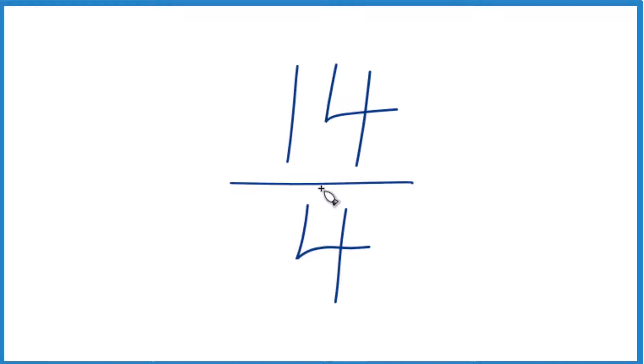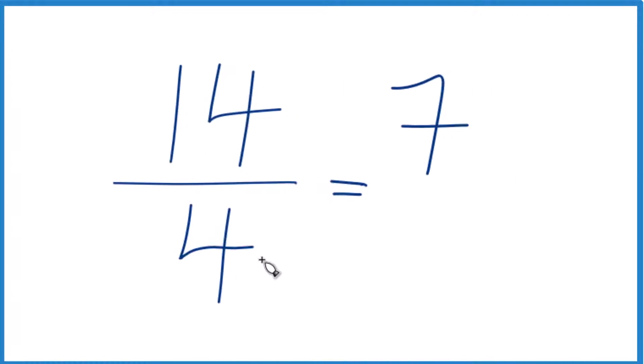I can see right away I have two even numbers. So I'll divide 14 by 2, that gives me 7, and 4 by 2, that gives me 2. We can simplify the fraction 14 fourths down to 7 halves, and we can't simplify this any further.